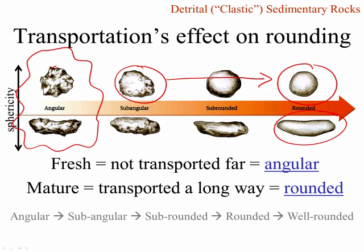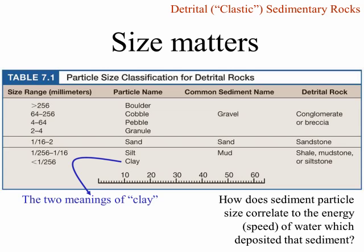Now moving on to size. Sedimentary particle size does not tell you anything about transport distance. There are small particles and large particles, and they can both form at the site where particles are broken off from the bedrock. They can both be transported a short distance and they can both be transported a long distance. For instance, glaciers travel many dozens of miles from their source area in the mountains to where they end up dumping their sediment, and in many cases they're transporting boulders the size of houses that entire distance. So just because a particle is big, that doesn't mean it's close to its source.